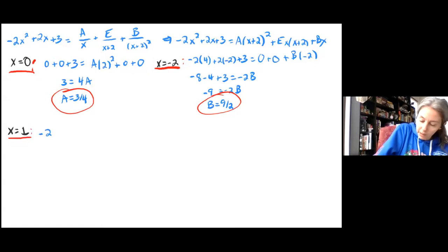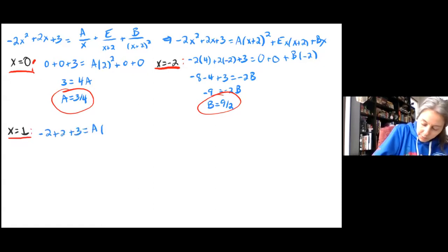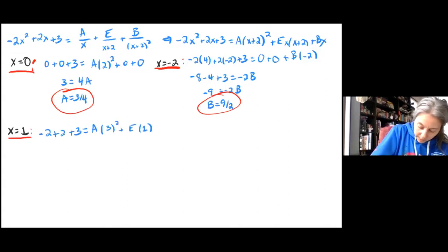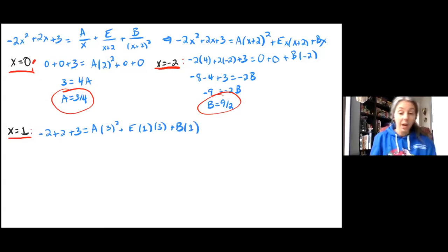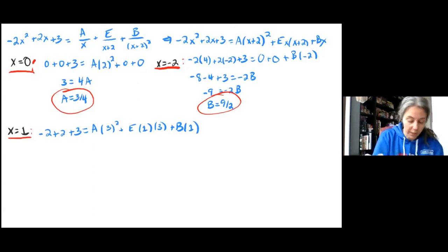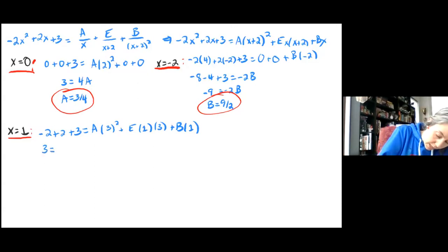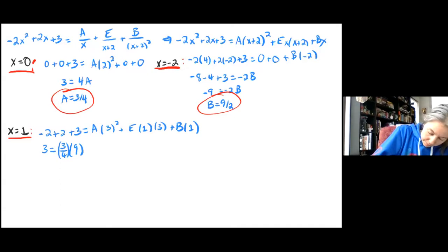Plugging in x equals 1: negative 2 plus 2 plus 3 equals A times 3 squared, plus E times 1 times 3, plus B times 1. Since I already know A and B, I can just replace them with the values I have. So I end up with 3 equals (3/4) times 9 plus 3E plus 9/2.